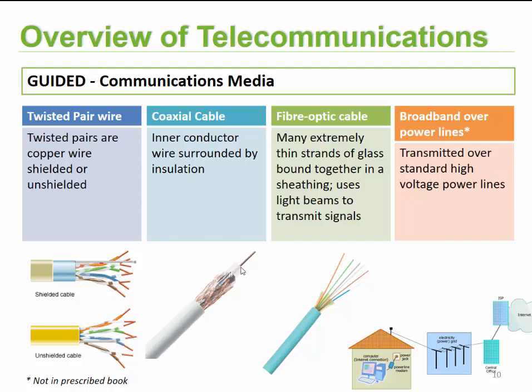Coaxial cables were found in older TV sets where an antenna received broadcasting signals and relayed them to the television. They contain an inner conductor — usually copper — protected by a plastic coating, with an insulated wire mesh around it to prevent outside magnetic interference and tampering.